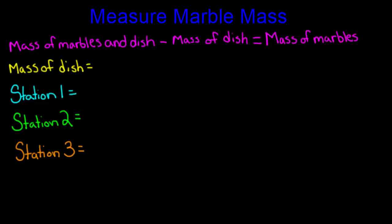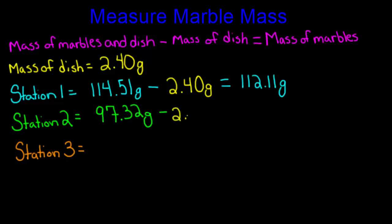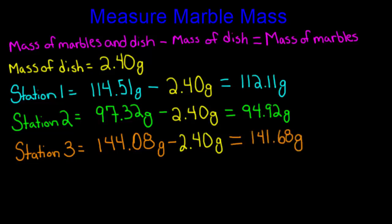In our example, the mass of the plastic dish was 2.4 grams. Therefore, for the first station, we subtract 2.4 grams from our combined mass of 114.51 grams, giving us a mass of just the half-inch marbles of 112.11 grams. For station two, we subtract 2.4 grams from 97.32 grams, giving us 94.92 grams for the one-inch marbles. And for the third station, we subtract 2.4 grams from 144.08 grams, giving us 141.68 grams for the two-inch marble.